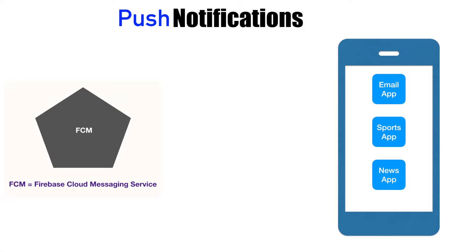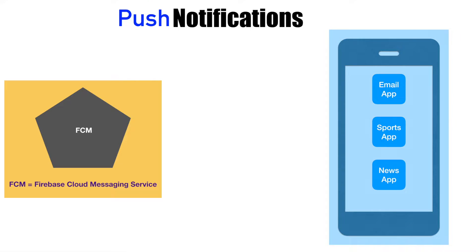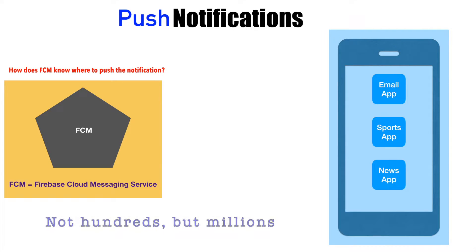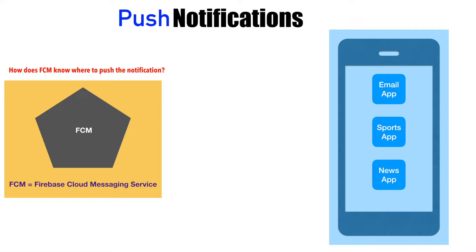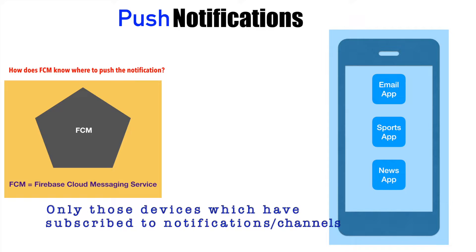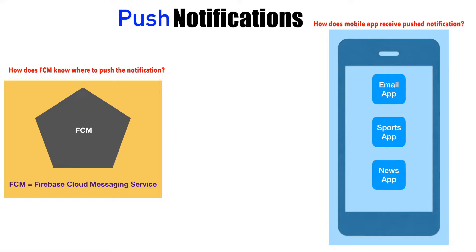There are two components here. One is the FCM, the other one is the mobile app. It would be quite normal to ask: how does the FCM know where to push notifications? There could be hundreds of devices — you may want to push it to one particular device or to certain devices which fall under a particular category. Another aspect is: how does the mobile app receive the pushed notification?